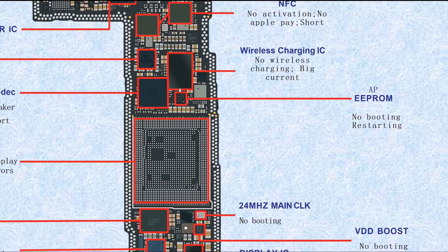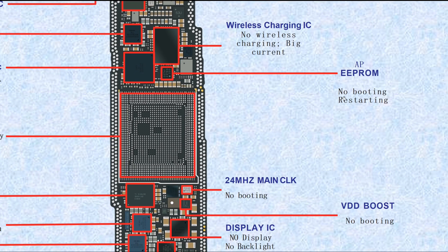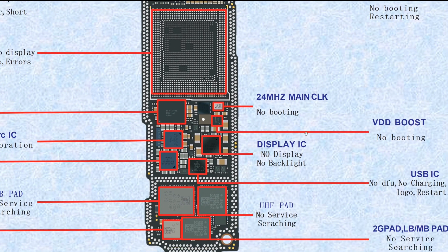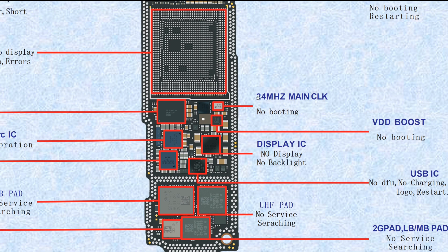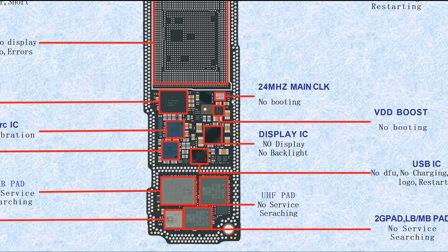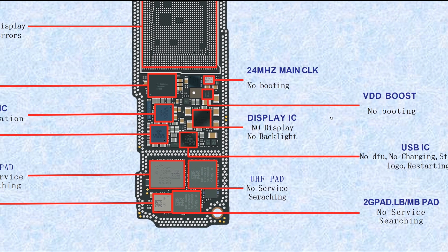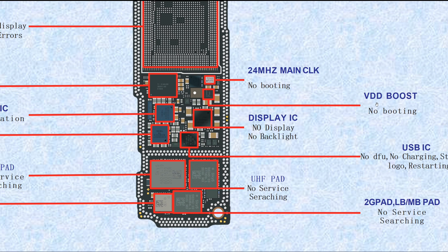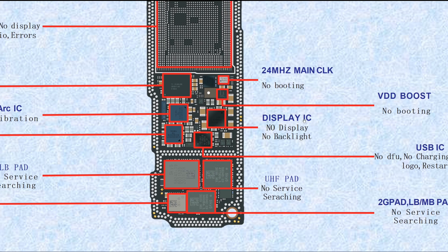This one is the AP EPROM, logic EPROM — if it is broken, it causes no booting or sometimes restarting. This one is the 24 MHz main clock — if broken, it causes no booting. This one is VDD boot IC — if broken, it causes no booting.